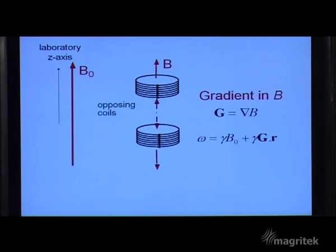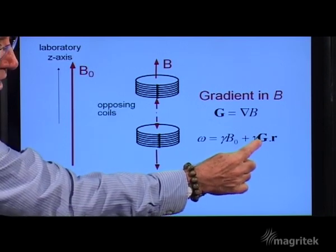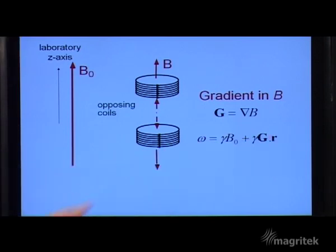But here we have to represent this in a multidimensional way. So we have a dot product between the gradient vector and the position vector representing that particular nuclear spin magnetization.